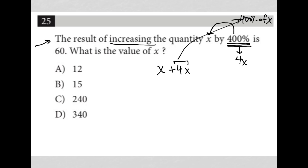So the result of increasing the quantity x by 400%, or 400% of x, equals 60. There's our equation — this is our translation. This is a translation question.